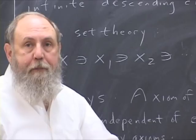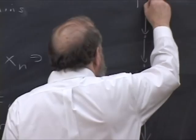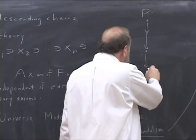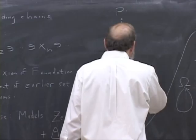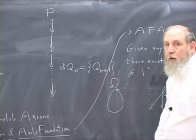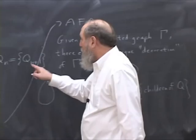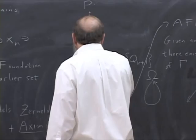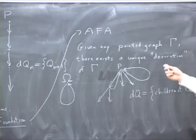Suppose I have an infinite descent. That's a pointed graph. Let's take the point to be here at the top. I have the condition that at each level, the decoration of the point qn is the set containing the decoration of the next point down. That would be the requirement of a decoration.